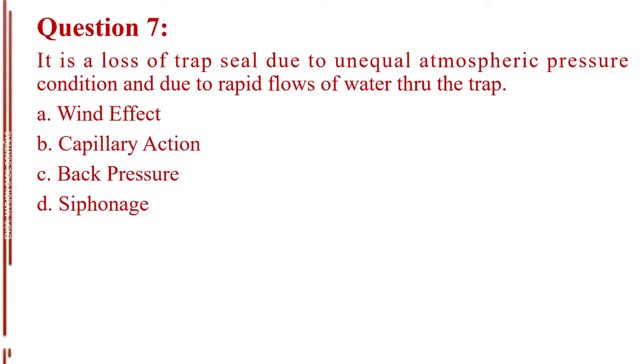Question number 7. It is a loss of trap seal due to unequal atmospheric pressure condition and due to rapid flows of water through the trap. Letter A, wind effect. Letter B, capillary action. Letter C, back pressure. Letter D, siphonage. The answer is Letter D, siphonage.